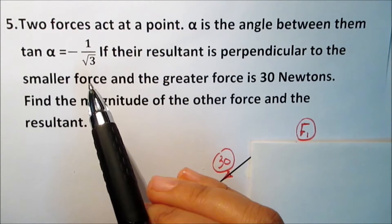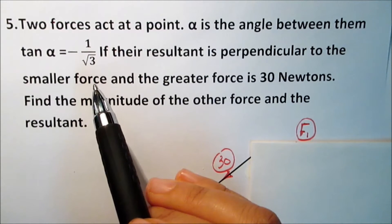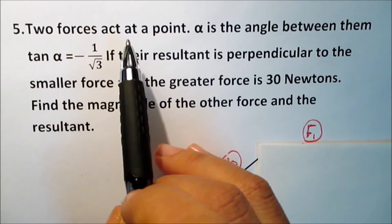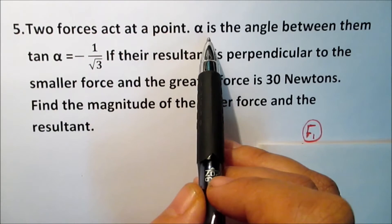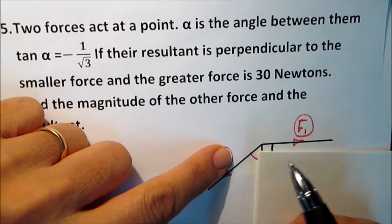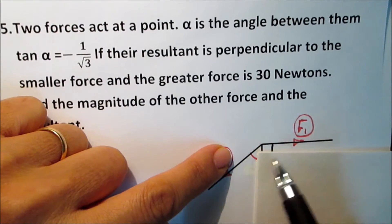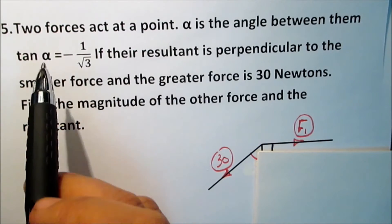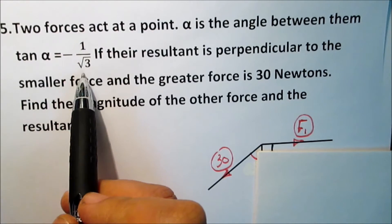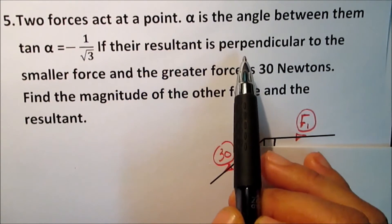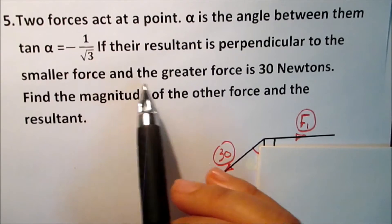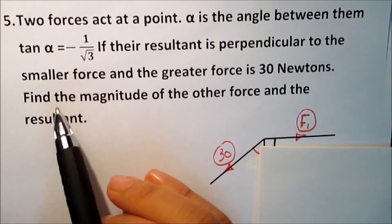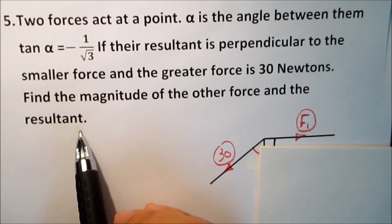Now, more examples on the resolution of a force into two components. Example: two forces act at a point. Alpha is the angle between them, where tan alpha equals negative 1 over square root 3. If the resultant is perpendicular to the smaller force and the greater force is 30 N, find the magnitude of the other force and the resultant.